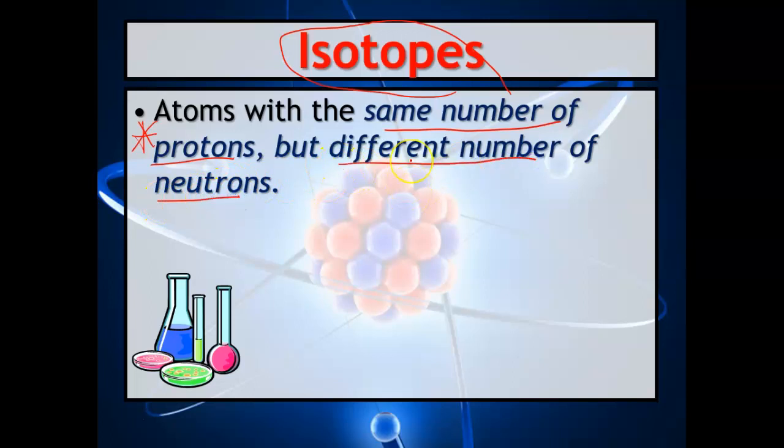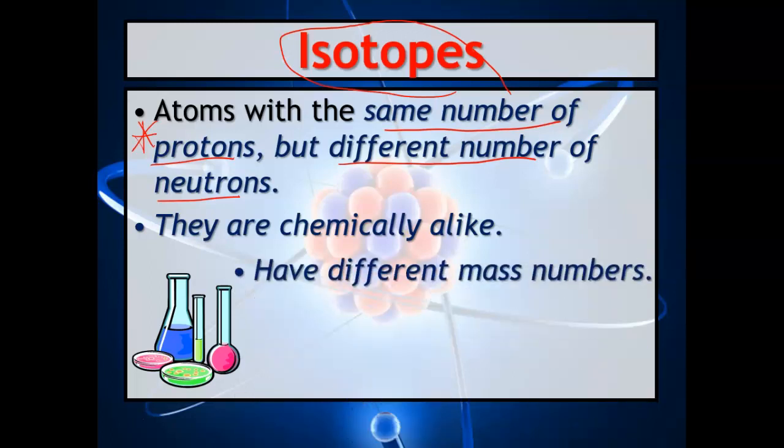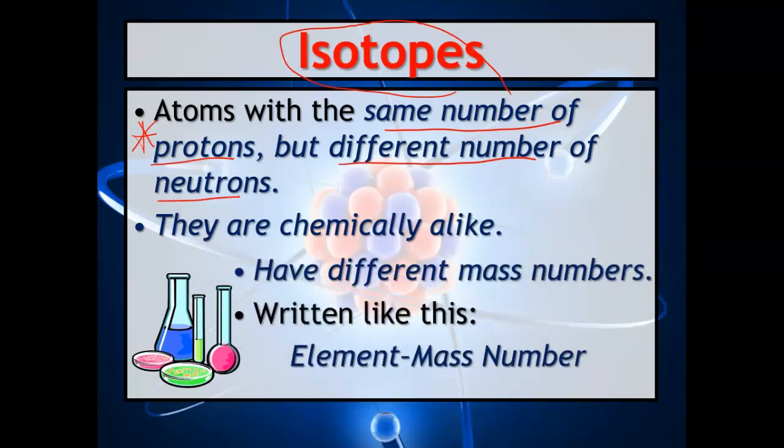Different number of neutrons. So how does this work? Well, they're chemically alike, but they have different mass numbers. They're written like this: element-mass number. I'll show you an example of the symbols in just a minute. But basically think of it like this: isotopes are like you when you gain weight or lose weight, kind of that idea.